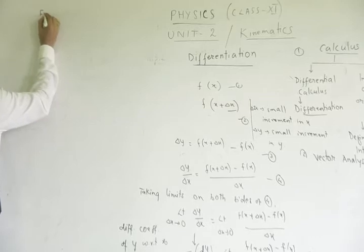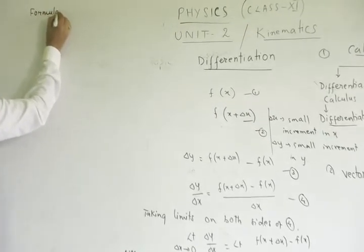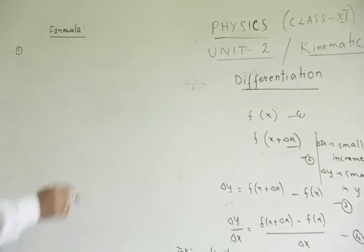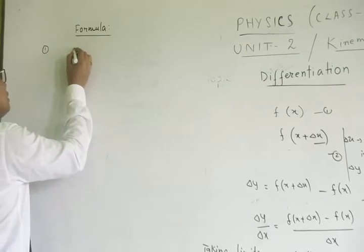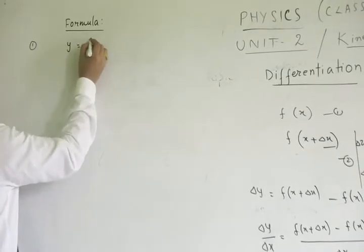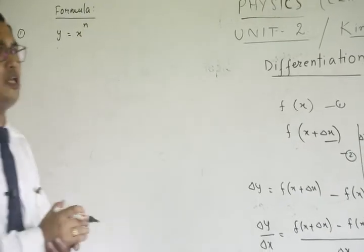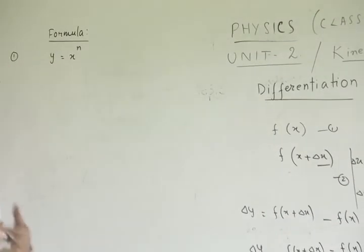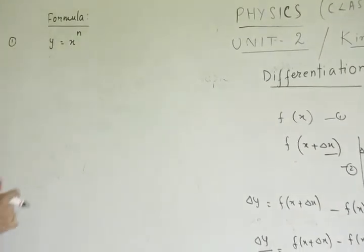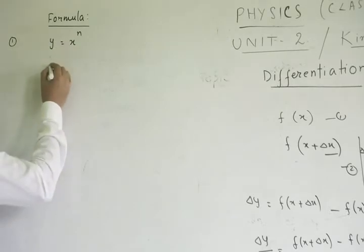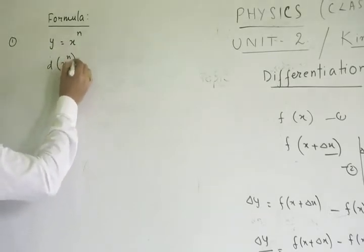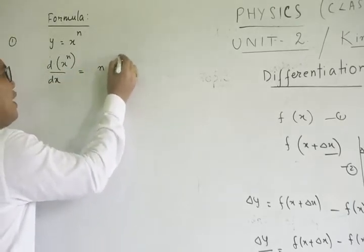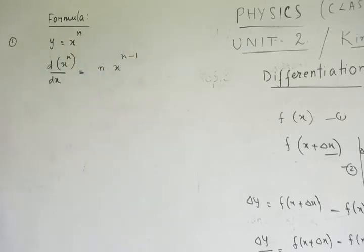Let us see some formulas. There is a function x to the power n — an algebraic function where n is some natural number, it may be 1, 2, 3, 4. The derivative of x to the power n with respect to x is n into x to the power n minus 1.